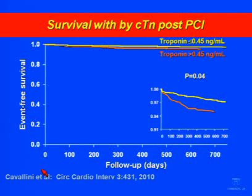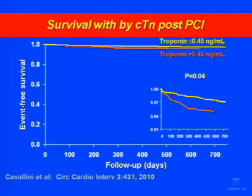These data are very similar to those recently published by Cavallini, which barely made statistical significance. That study used a 10% CV value—still higher than I would advocate. When they corrected for other factors of illness present at baseline, it was no longer statistically significant. So as assays are getting more sensitive, even though people are still not using the right cut-offs, the post-PCI significance of elevations is disappearing.